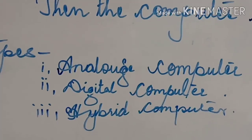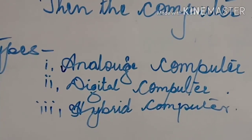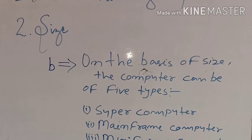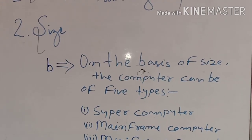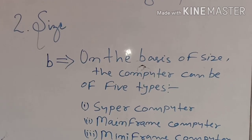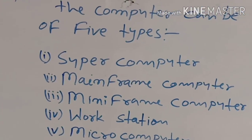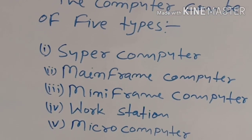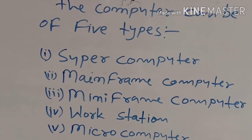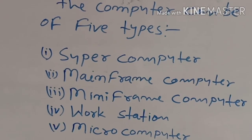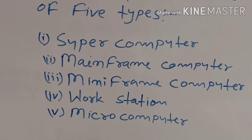On the basis of size, the computer can be of five types — number one: super computer, number two: mainframe computer, number three: mini frame computer, number four: workstation, and number five: micro computer.